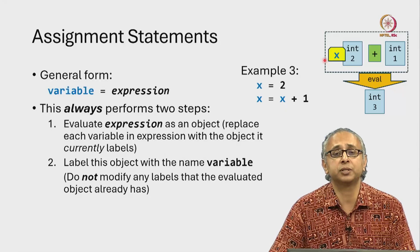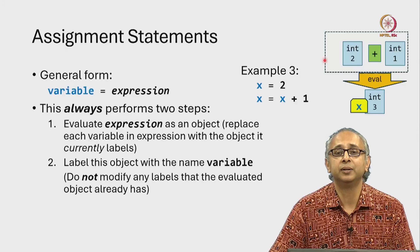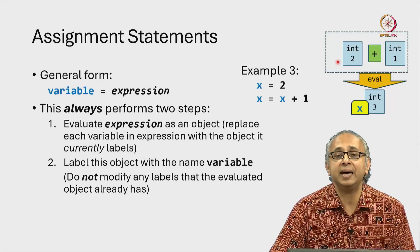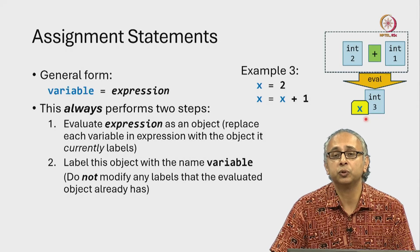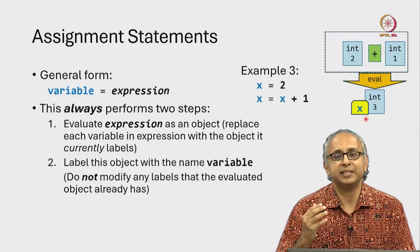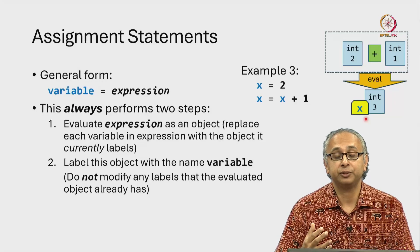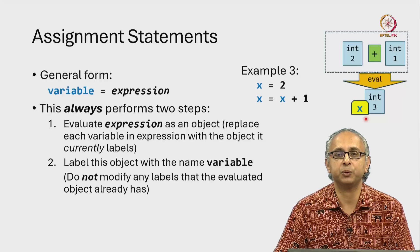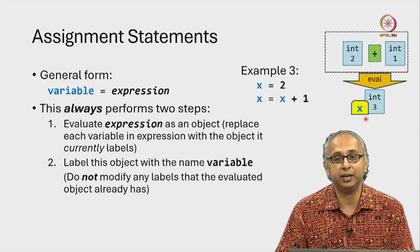So what does it mean to do this assignment statement? It's very simple: we move the label to the evaluated object. This object no longer has the label x — the label x has moved to this new object. So this is exactly how an assignment statement works. If you ever find yourself getting confused about how a particular assignment statement works, come back and review these three examples.